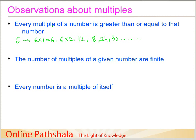What this rule says is: what is the minimum multiple we can have for a number? That would be when we multiply the number by 1. Here we multiplied 6 by 1 and got 6. All the other multiples — 12, 18, 24, 30 — are greater than 6. So every multiple of a number is greater than or equal to that number.